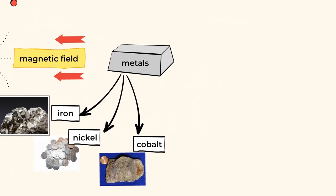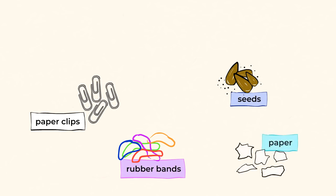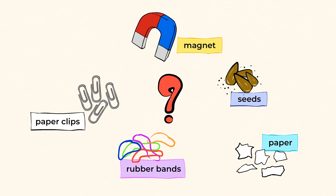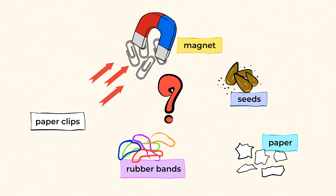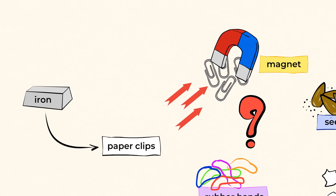For example, if you spread some paper clips, rubber bands, seeds, and small pieces of paper on the table, and then you move a magnet closer to them, what do you think will happen? The only objects that the magnet will attract will be the metal paper clips, because they are made of iron.